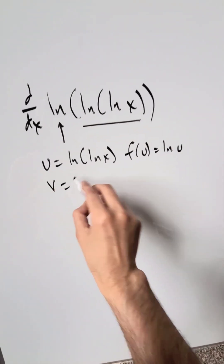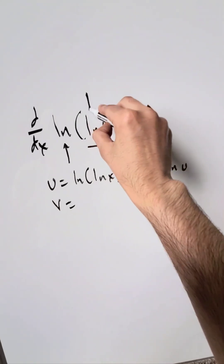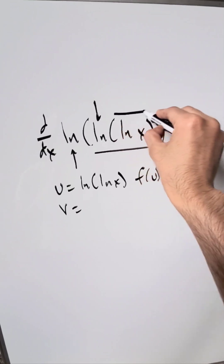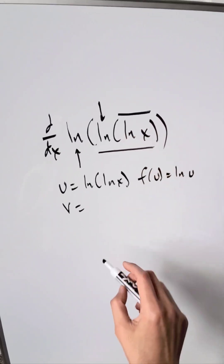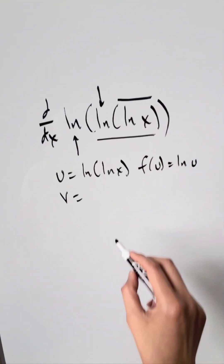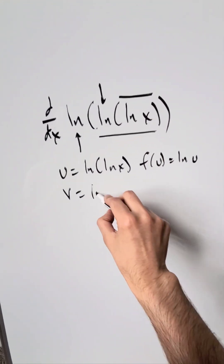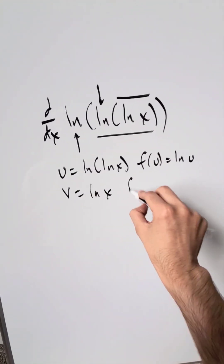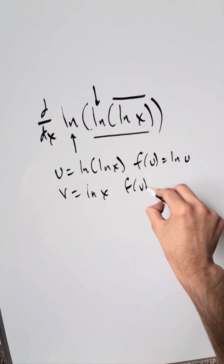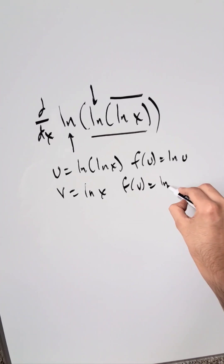We will do a v substitution. This natural log and the item which comes after that — a v substitution will capture that. v is equal to natural log of x. The function with regards to v is equal to ln of v.